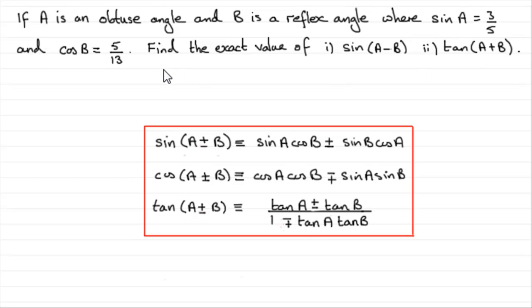Now when I get students doing questions like this, their first reaction is okay well why can't I get on a calculator, just work out what angle A is by doing the inverse sine of 3 fifths and get what B is by doing the inverse cos of 5 thirteenths and then just subtracting the angles, take the sine, or add them and take the tan. Well that's all very well but you won't necessarily get exact values when you do the inverse sine and the inverse cos of these values. So how can we do this without working out the angles A and B?